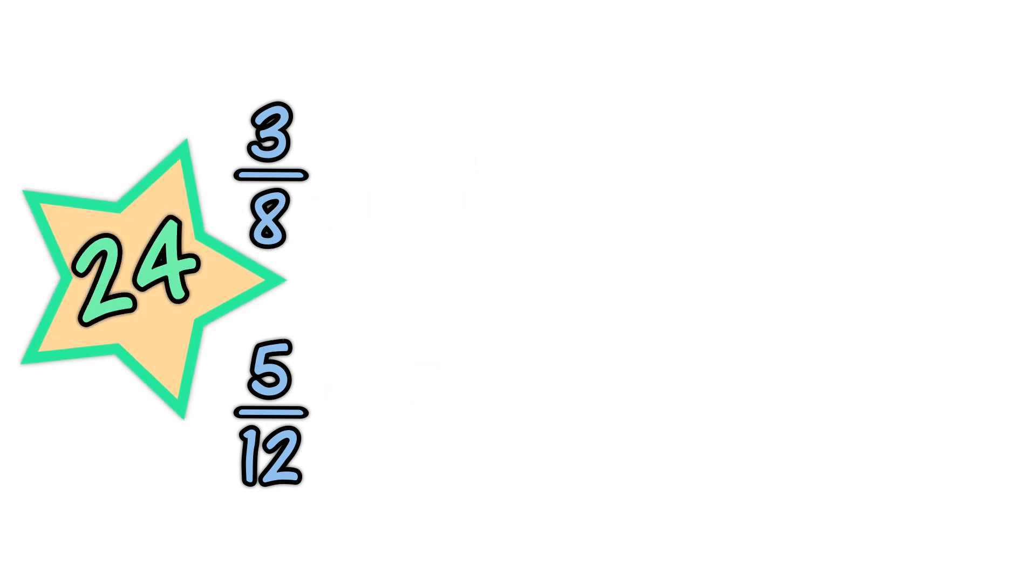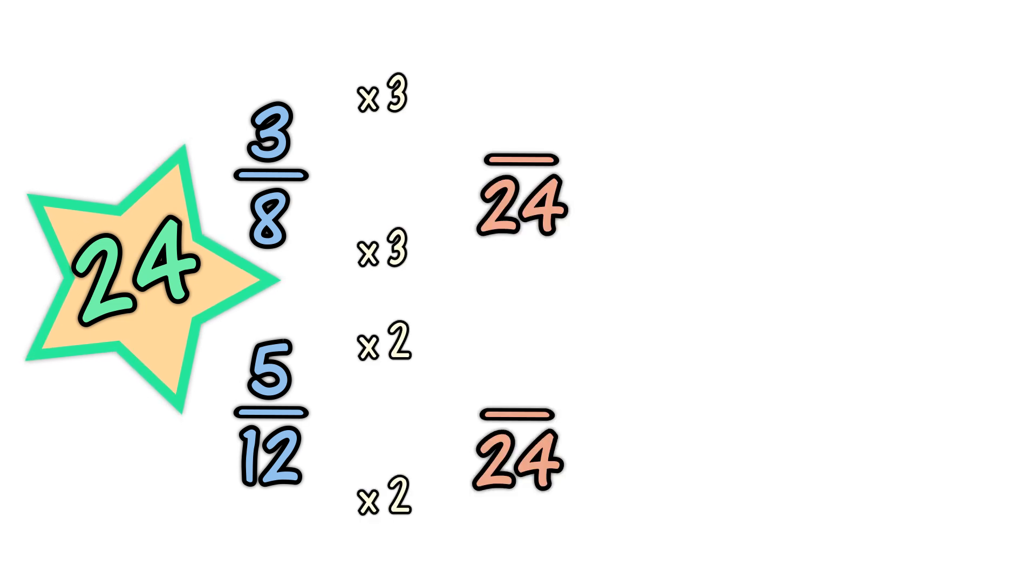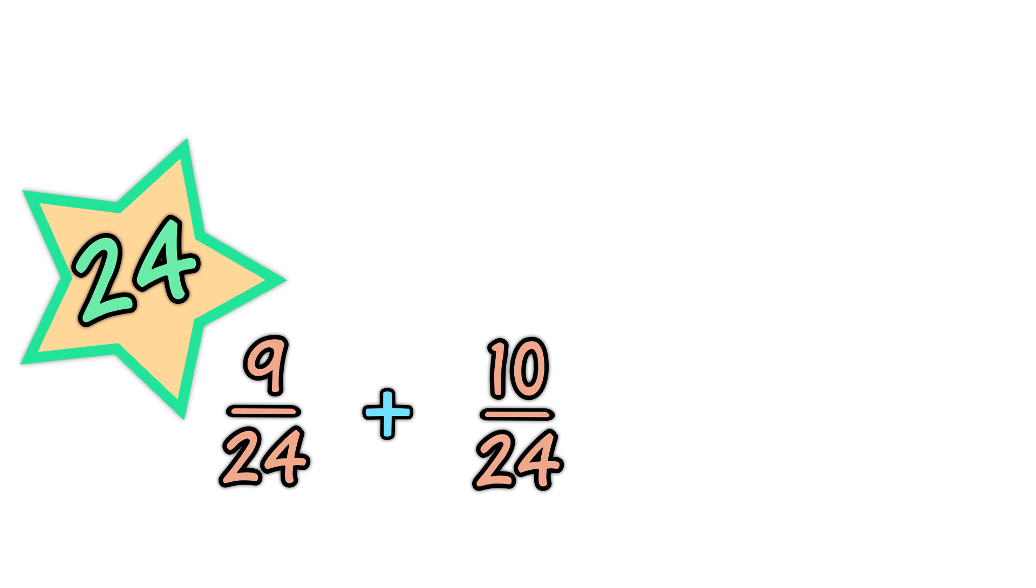Let's try to make the denominators the same. When you multiply eight by three, you get twenty-four. And when you multiply twelve by two, you also get twenty-four. So let's use that. Three-eighths becomes nine-twenty-fourths. And five-twelfths becomes ten-twenty-fourths. Now we can do the addition. Nine-twenty-fourths plus ten-twenty-fourths equals nineteen-twenty-fourths. The fraction's already as simple as it can be. The answer is nineteen-twenty-fourths.